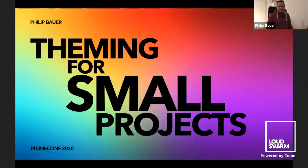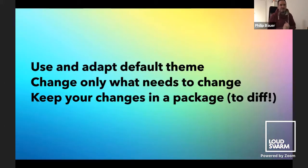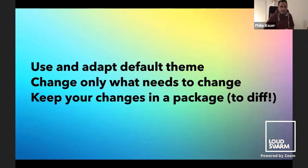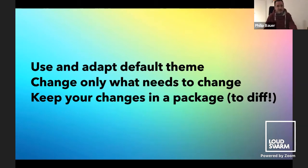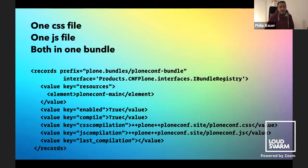My approach to small projects is the following: same as we do in Plone when we develop code, we use and adapt everything that's there — that is the default theme. We change only what we need to change and keep our changes in a package to get a git diff. So that means I often have only one CSS file and one JavaScript file registered in a bundle.